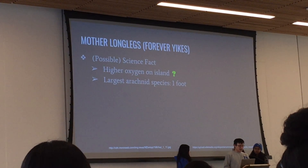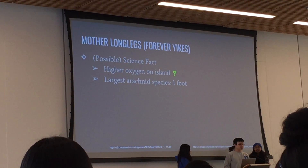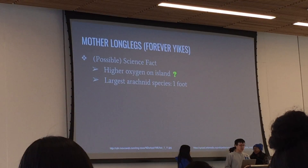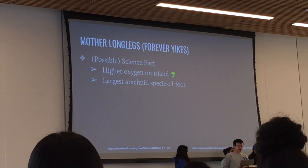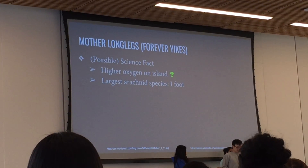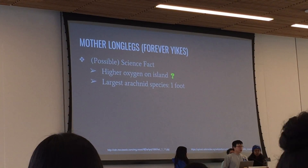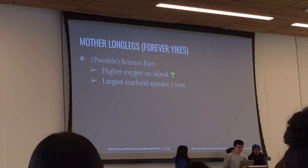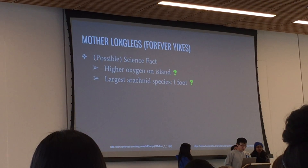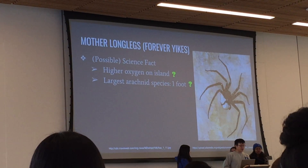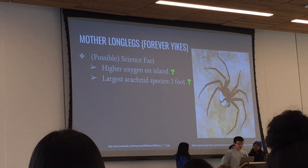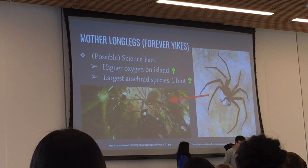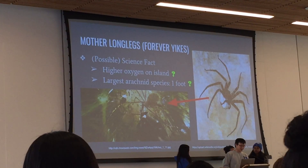The largest arachnid species ever discovered on Earth is the giant huntsman spider, which has been recorded growing to one foot in size. So it is possible that with the right concentration of oxygen, a giant spider could exist.